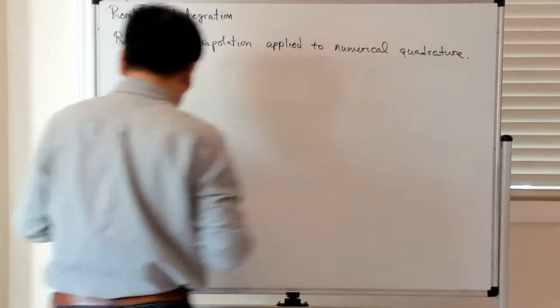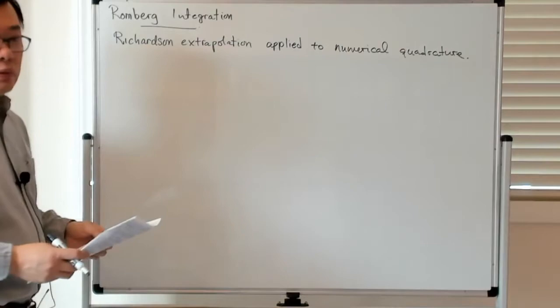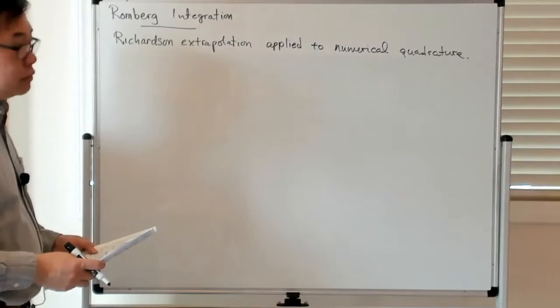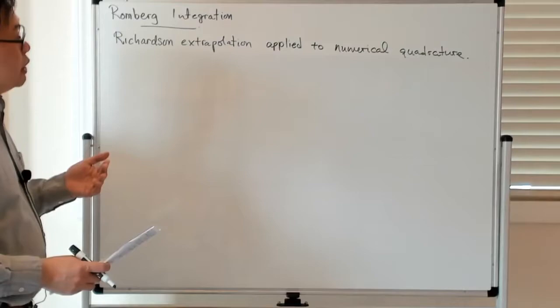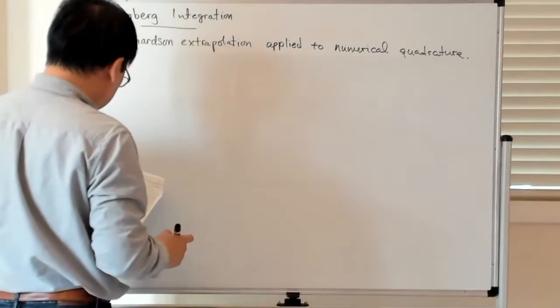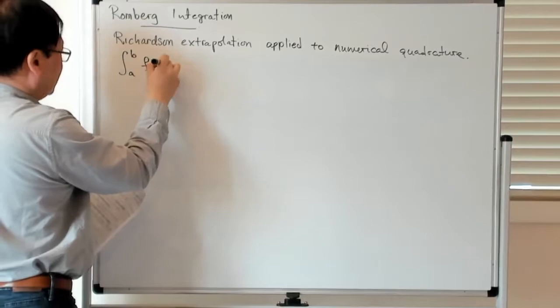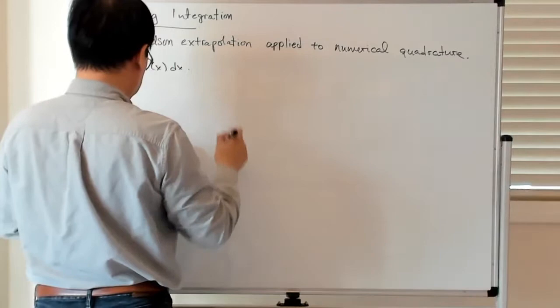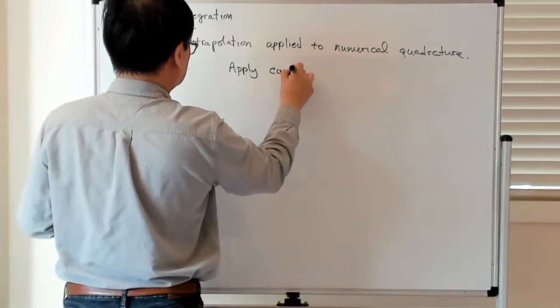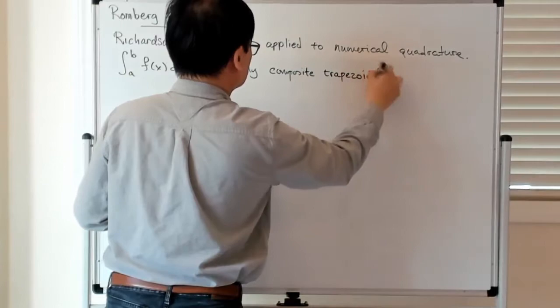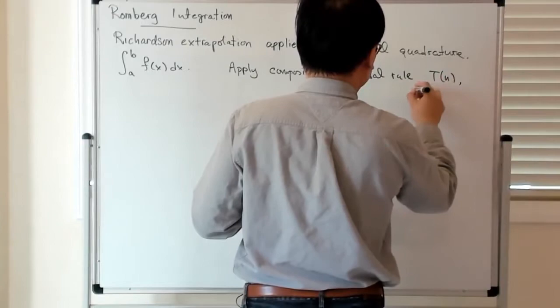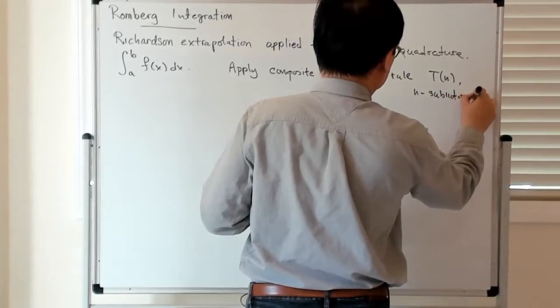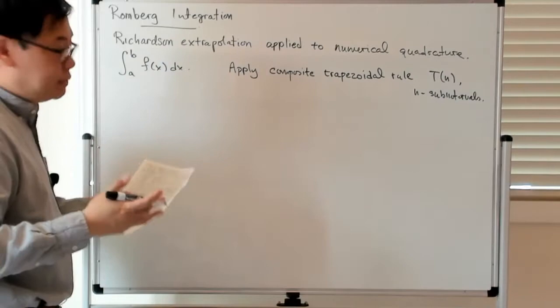Let's make a few observations. We introduced the composite trapezoidal rule, and it turns out the composite trapezoidal rule is nice when you double the number of subintervals. So let's have an integral from a to b of f(x) dx, and apply the composite trapezoidal rule, calling that T_n where n is the number of subintervals. Let's start with the simplest case: one subinterval, T1.